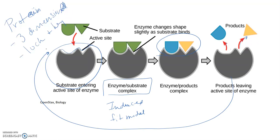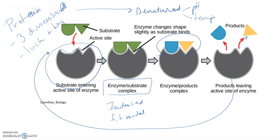There are things in the cell that can change the three-dimensional shape of an enzyme — when that happens, we call it denatured. Denatured means that its three-dimensional shape is altered so it can no longer bind to its substrate. Some ways an enzyme becomes denatured include changes in pH: all enzymes have an optimal pH at which they function best, and if it gets too far outside that range, their shape can change. The same applies to temperature — all enzymes have an optimum temperature, and if it's outside that range, there can be problems. Salt concentrations can also cause problems for the three-dimensional shape of an enzyme.